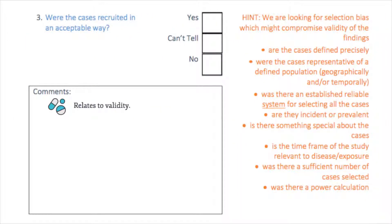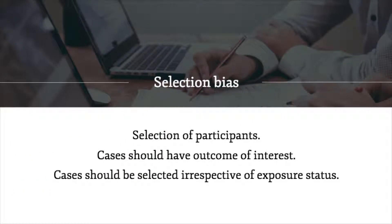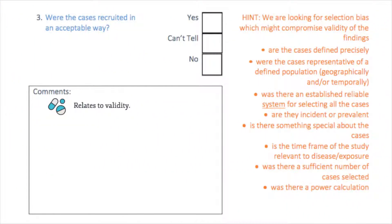The CASP checklist suggests a number of useful points to consider regarding the selection of cases into the study. This is an important issue, as the selection of appropriate cases and controls is key to the validity of a case control study. Cases should be people with the outcome of interest, but selected irrespective of their exposure status. In this case, it would not be appropriate for cases — those who had died by suicide — to be chosen because they had eczema. It is also important that cases are classified according to a reliable and standardized means of classification, such as the ICD classification system or coroner's reports. In this study, cases were identified using coroner's reports, which appears to be a reliable means of classification.